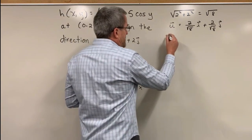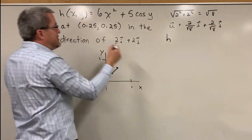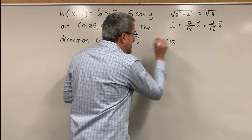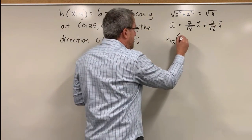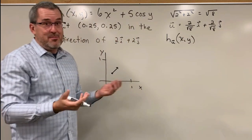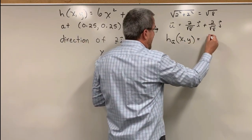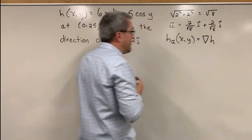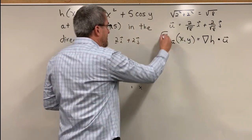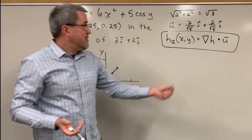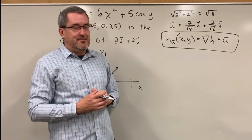Now the boat is here at (0.25, 0.25), going to travel in that direction, but per 1 mile of distance rather than square root of 8. The directional derivative notation is: how is the depth function changing in the direction of that unit vector? The notation uses subscript u-vector at the point we're interested in, in our case the point (0.25, 0.25). To compute that directional derivative, we need a gradient vector — the gradient of h dotted with that unit vector. We need two pieces: the gradient vector and the unit vector. We have the unit vector; now we need the gradient vector.